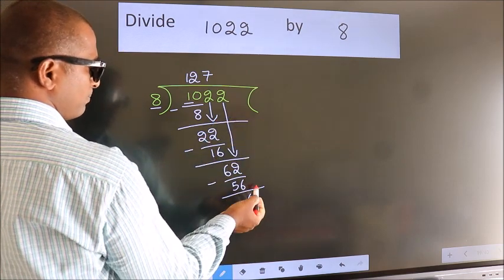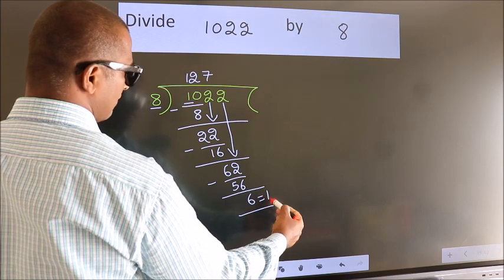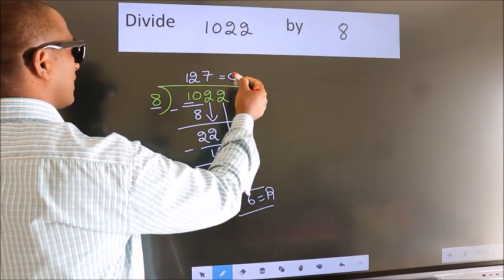No more numbers to bring down, so we stop here. This is our remainder. This is our quotient.